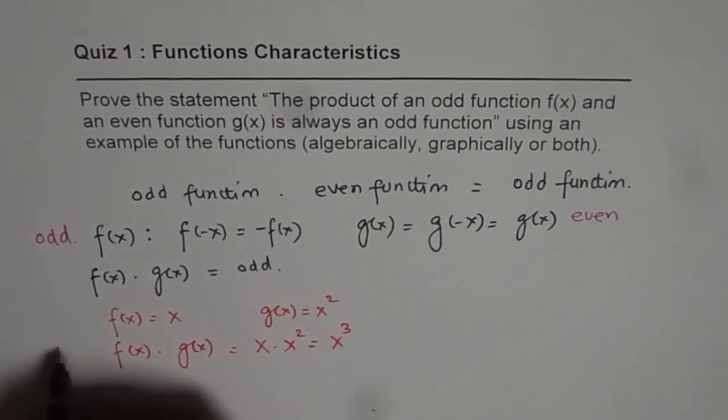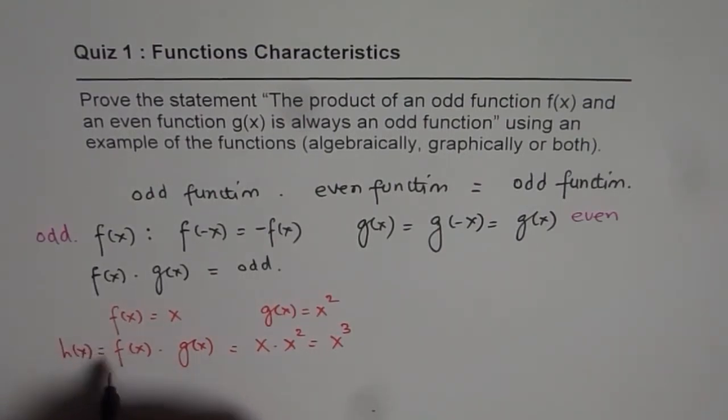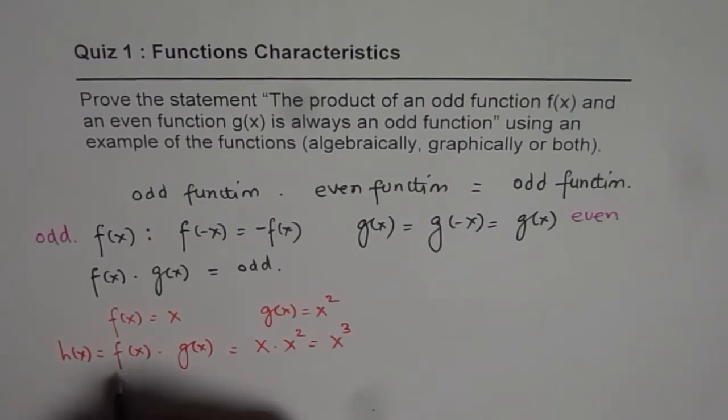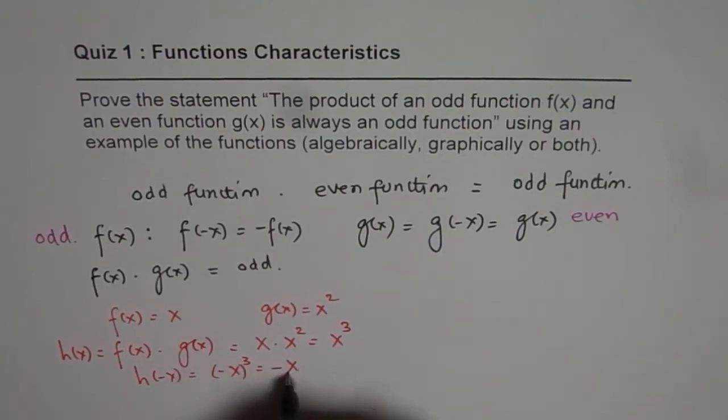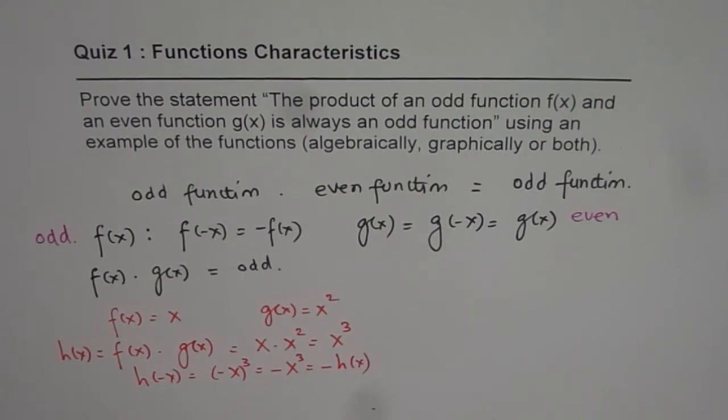So let's say h(x) equals this and we know what is h(-x) will be -x cube, which is equals to -x cube or -h(x). So that means odd. So that is how we can algebraically show with an example that it is odd function.